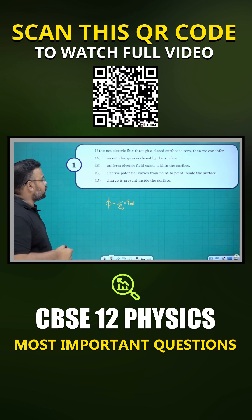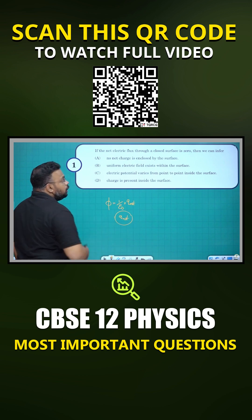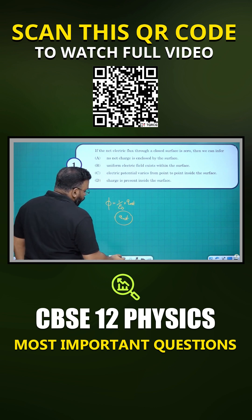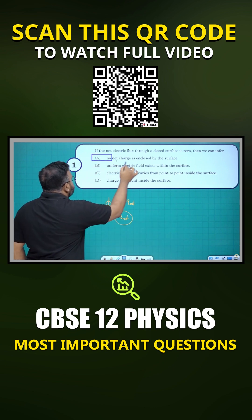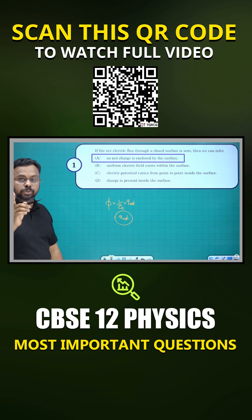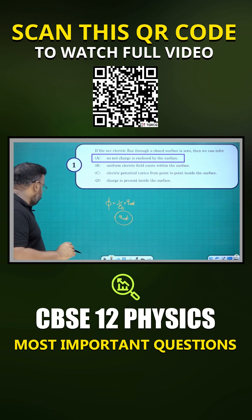It is given that the net electric flux is zero. So phi is zero means Q net should be zero. So what is the condition for the flux to be zero? The net charge enclosed by the surface should be zero. That means you can clearly see that is our first option. So A is the right answer for this question. Very simple question based on Gauss's theorem, chapter one, electric charges and fields.